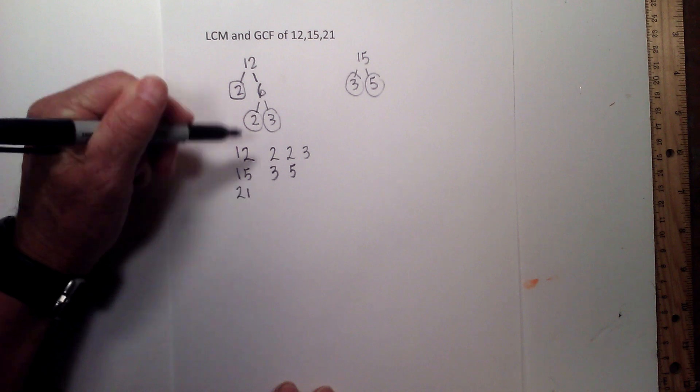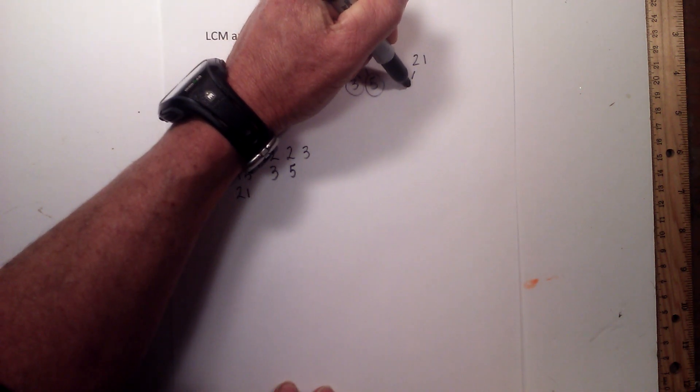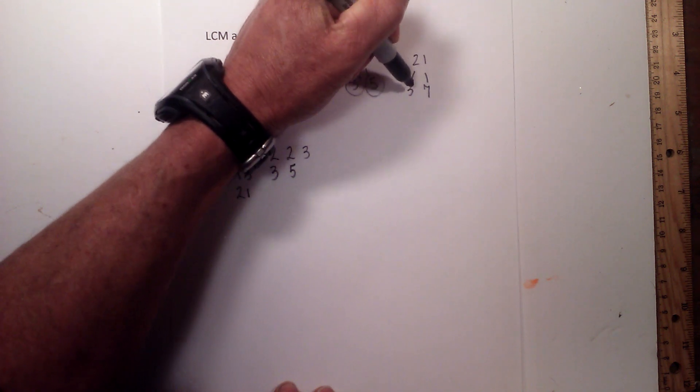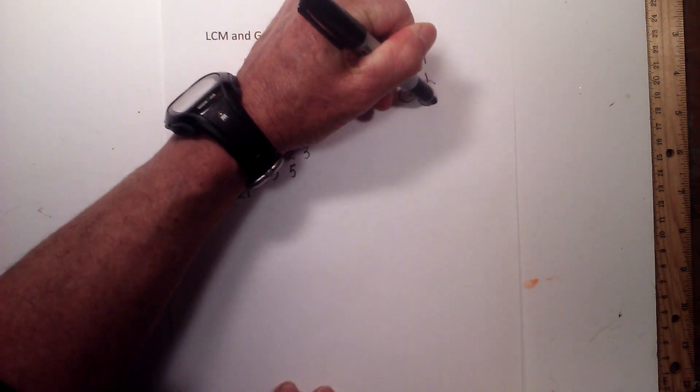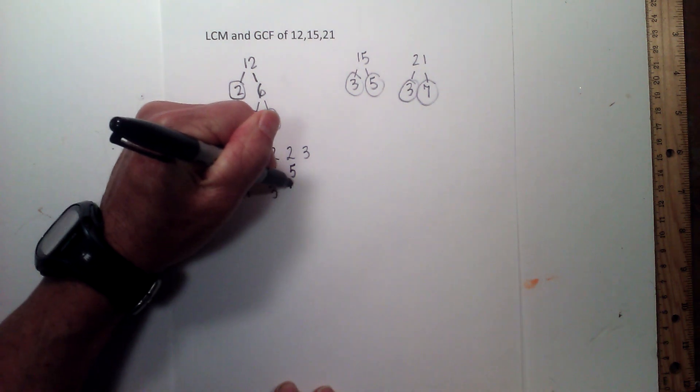Now for 21, let's go 3 times 7 equals 21, circle both of these because they are prime, so that is 3 times 7.